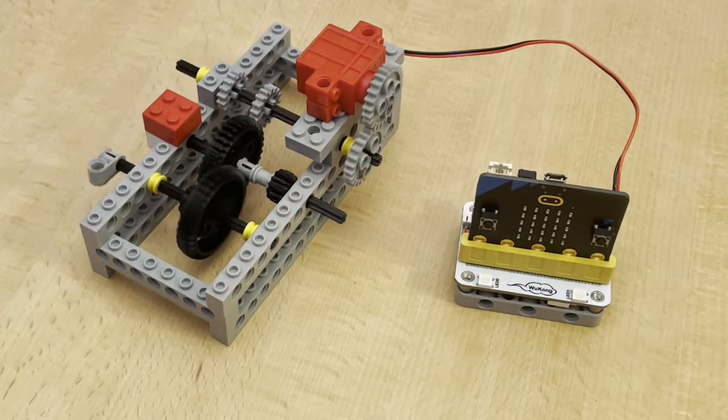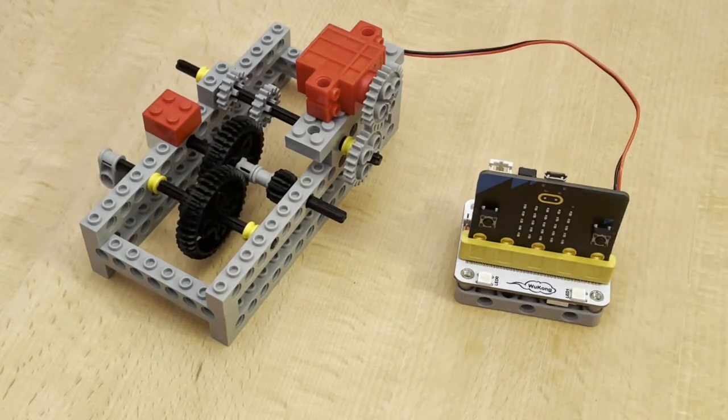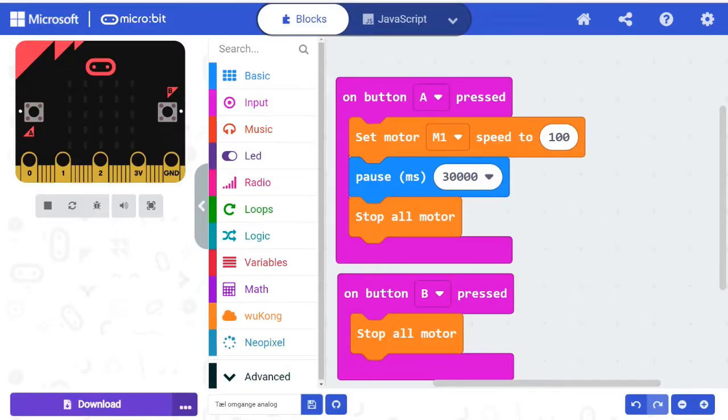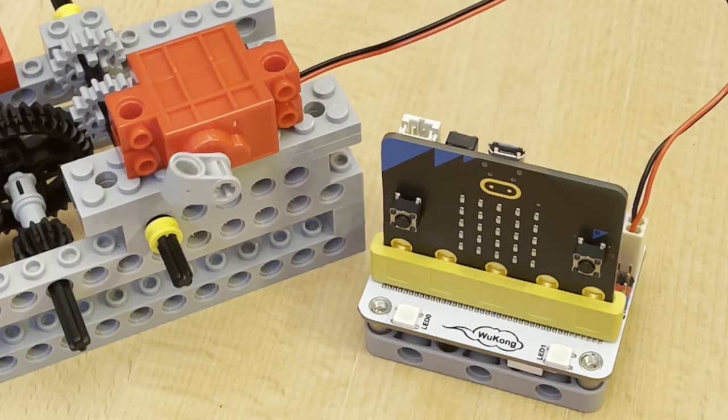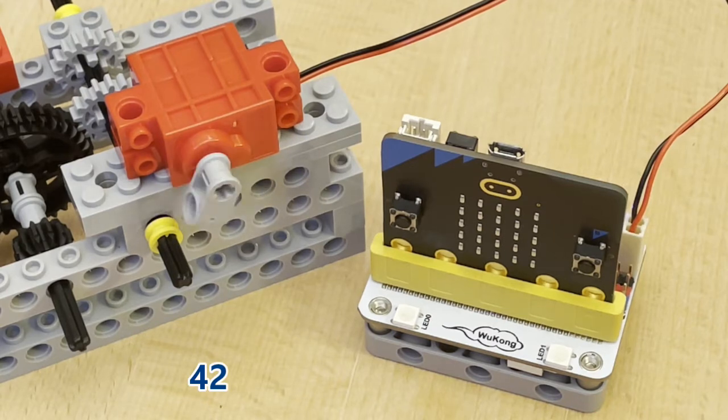Now we will examine how many turns the pointer makes in 30 seconds. We therefore will change the program. We start by counting how many turns the motor makes in the wanted 30 seconds. Here it is 42.